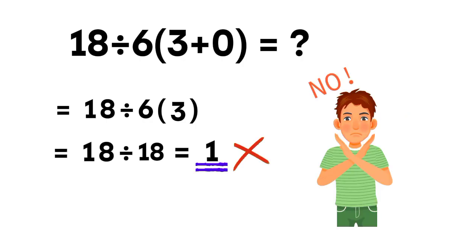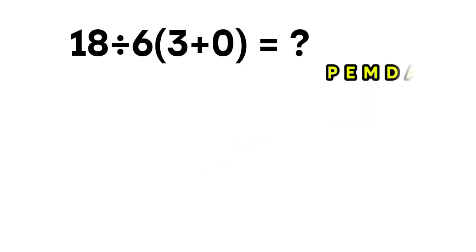But that result is incorrect, because we must follow the order of operations. According to PEMDAS, parentheses first, then exponents, then multiplication or division from left to right, and finally addition or subtraction from left to right. In this expression,